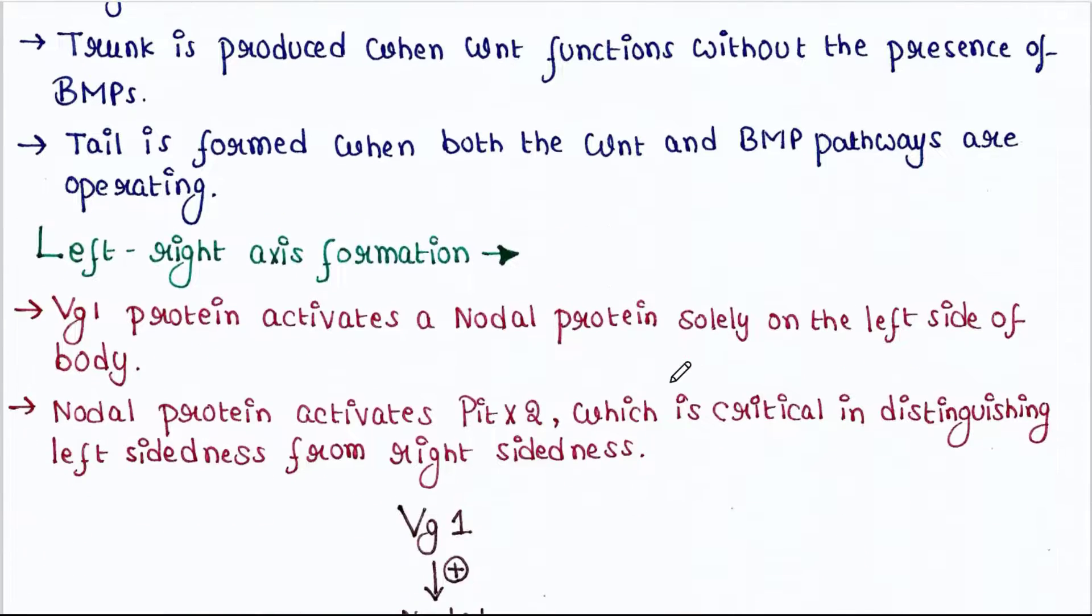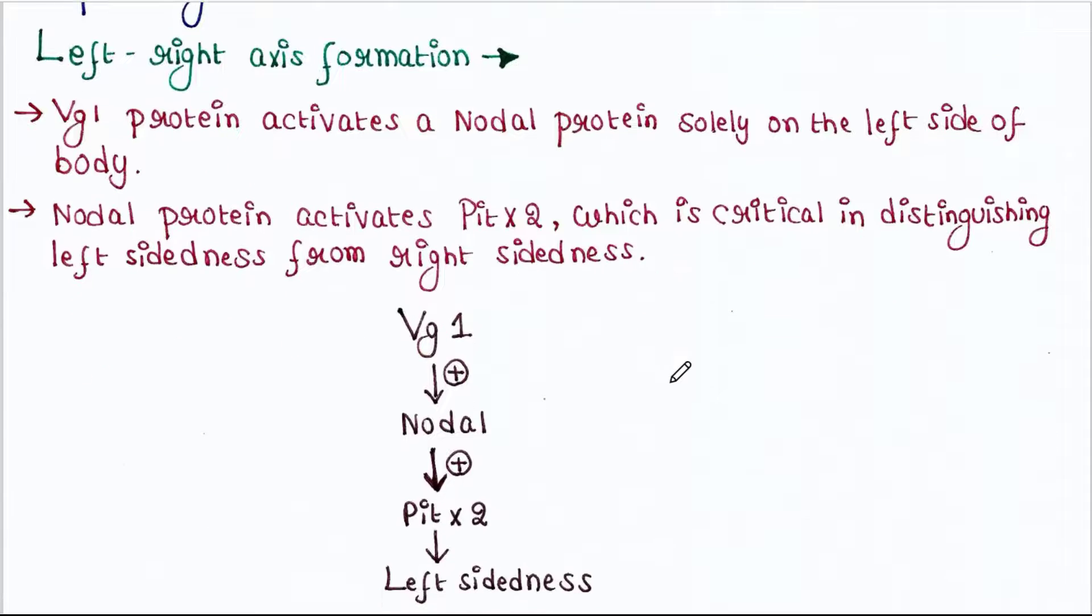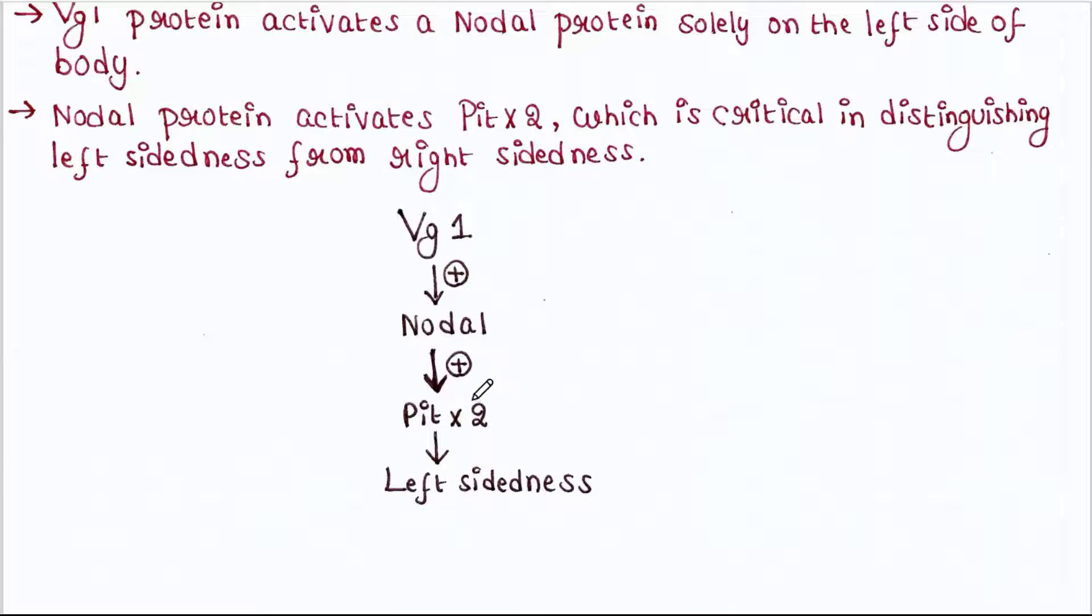Left-right axis formation. Vg1 protein activates a nodal protein solely on the left side of the body. Nodal protein activates PITX2, which is critical in distinguishing left-sidedness from right-sidedness.